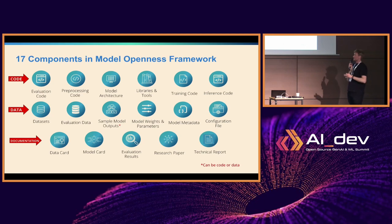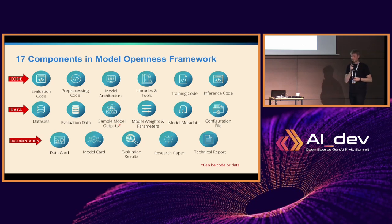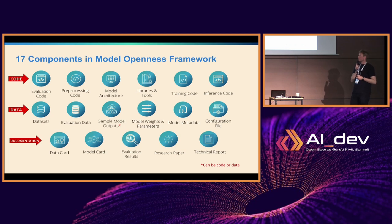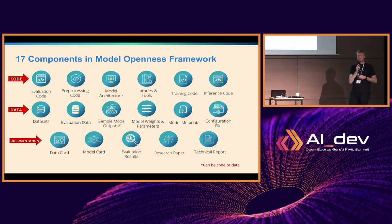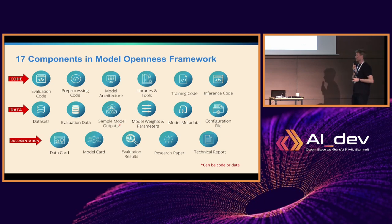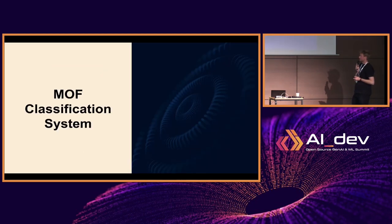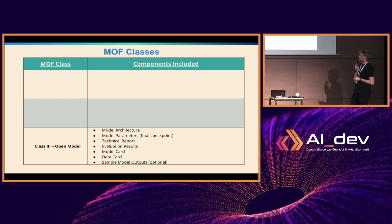We've mapped out 17 components with regards to deep learning models. In the first row we have code components, in the second row we have data components — notably model weights and parameters — and finally documentation. A major novelty in our recommendations is moving away from using open source software licenses for weights or open models, and instead using data licenses.